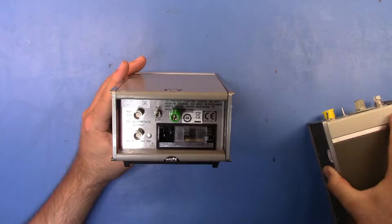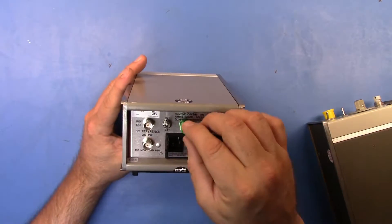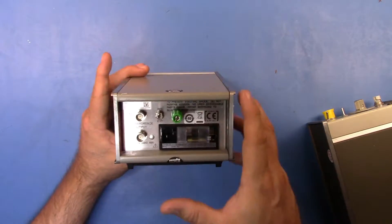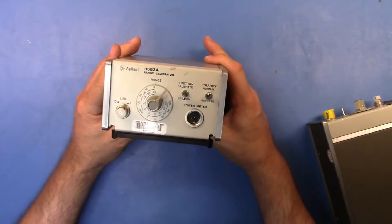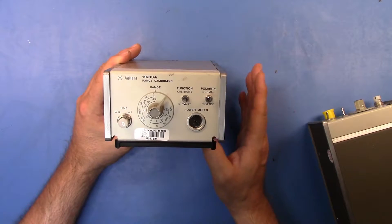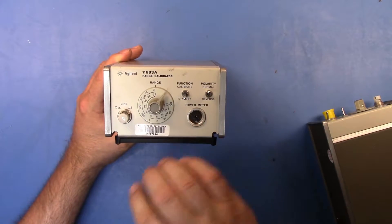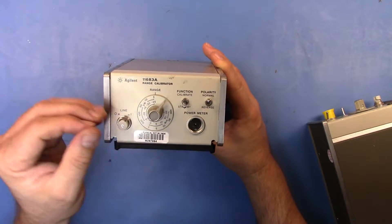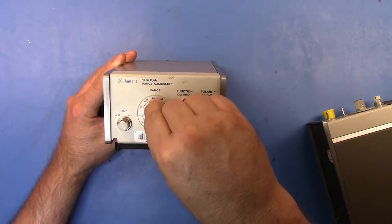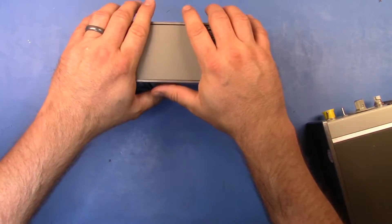Now what that option is is it gives me an ability to put an external reference into this. So how this thing works basically is that there is an accurate internal voltage reference that's set to 145 millivolts plus or minus two millivolts and then it utilizes a voltage divider to go and create the individual voltages for each of the ranges that you see here on the front.